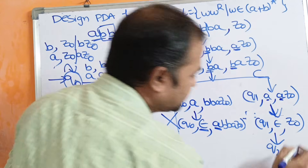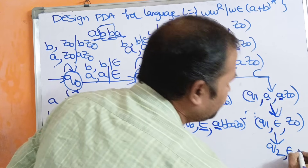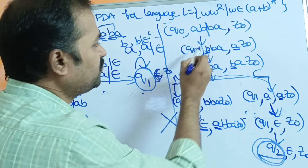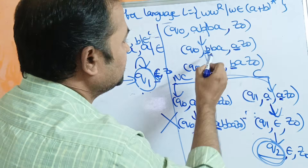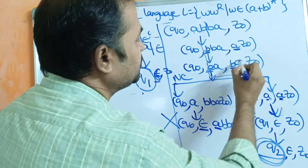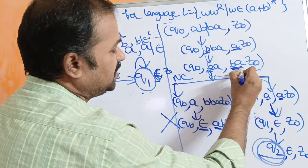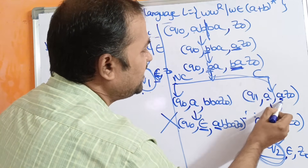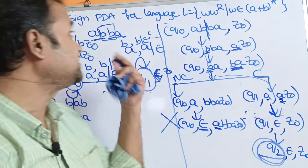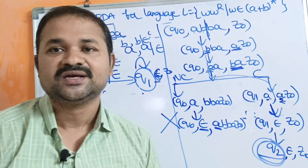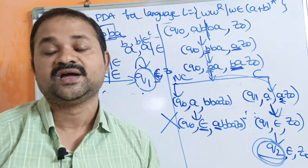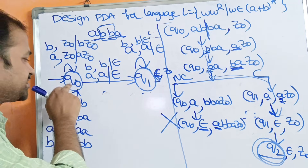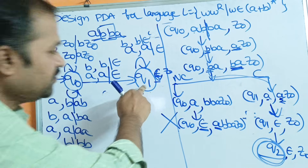The entire input string is completely processed. In summary, A is pushed then B is pushed (stack content BA), then center is reached and we pop B then pop A, stack becomes empty, and the final state Q2 is reached. This is the design of PDA for the language WW^R, which is a non-deterministic pushdown automaton (NPDA). For the same input symbol A applied on state Q0, we move to either Q0 or Q1.